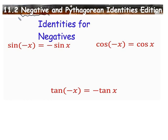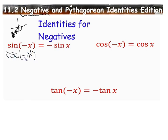Let's start by talking about negative identities. Sometimes we might take the sine, cosine, or tangent value of a negative number because it is possible to have a negative angle — we can always measure an angle going downwards. When taking the sine of a negative angle, that's the same as the negative sine value of the positive angle. This identity also applies to cosecant, the reciprocal trig function of sine, so if you know one, you know the other.